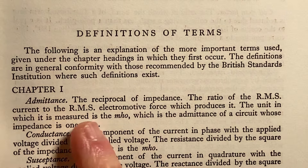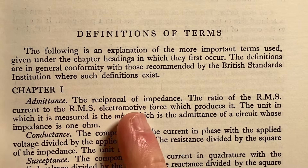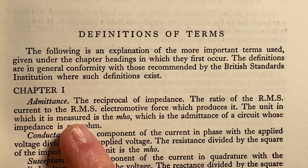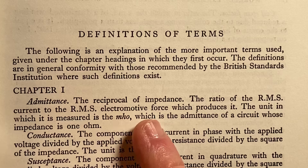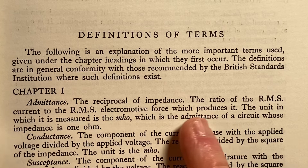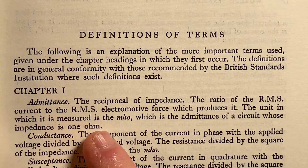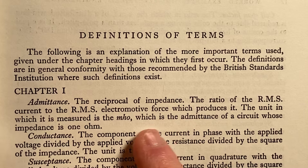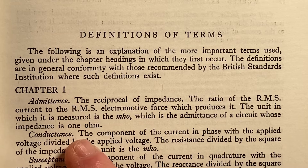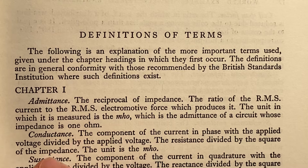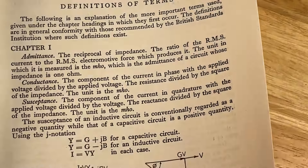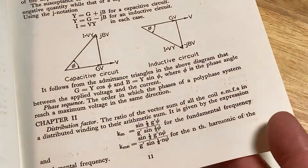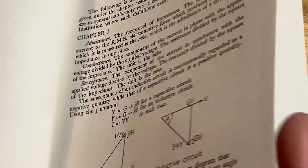The definitions are in general conformity with those recommended by the British Standards Institution where such definitions exist. So chapter one covers admittance — the reciprocal of impedance. The ratio of the RMS current to the RMS electromotive force which produces it. The unit in which it is measured is the MHO, which is the admittance of a circuit whose impedance is one ohm. Conductance. It just goes through and defines things.